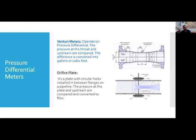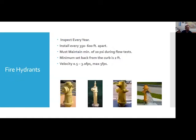Pressure differential meters: the venturi meter operates on pressure differential — the pressure at the throat and upstream are compared, and the difference is converted into gallons or cubic feet. The orifice plate is a plate with a circular hole installed between flanges on a pipeline; pressure readings at the plate and upstream are compared and converted to flow. These were common in older pump stations before conversion to mag meters, and still have their place if kept serviced.